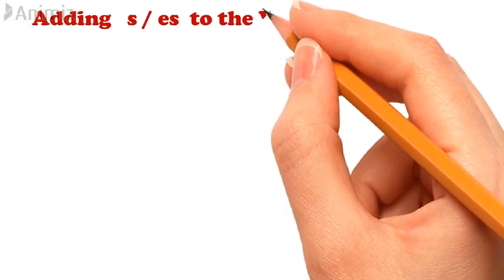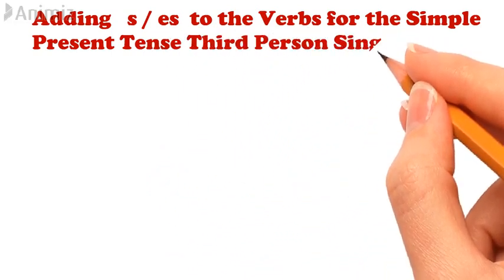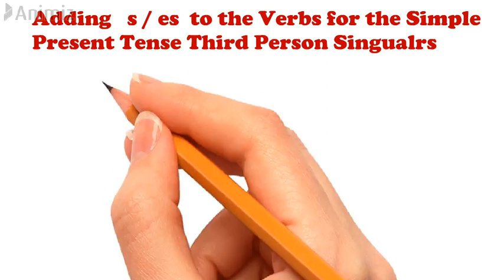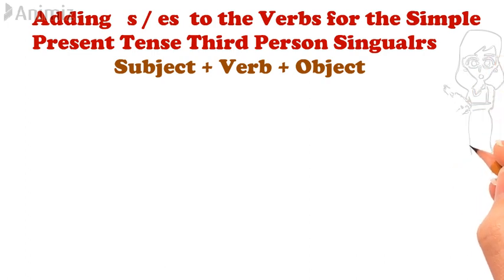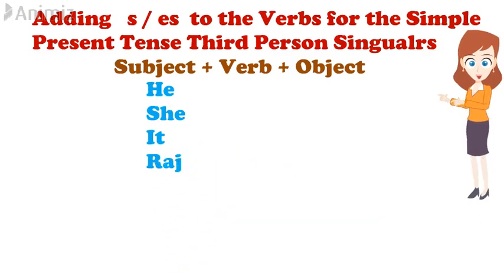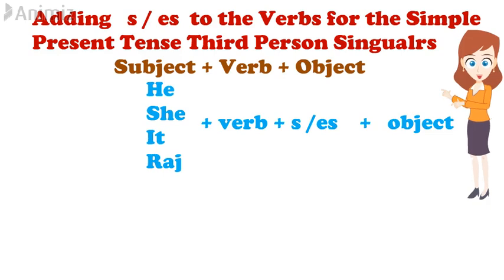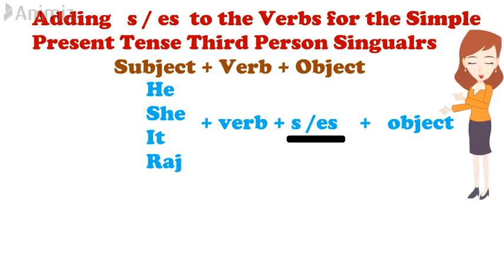Adding S or ES to the verb for the simple present tense third person singulars. Friends, we need to change the verb forms according to the subject. Whenever we use simple present tense and the subject is a third person singular, we need to add S or ES to the verb. Now, how to decide whether to add an S or ES? Here are the rules to follow.